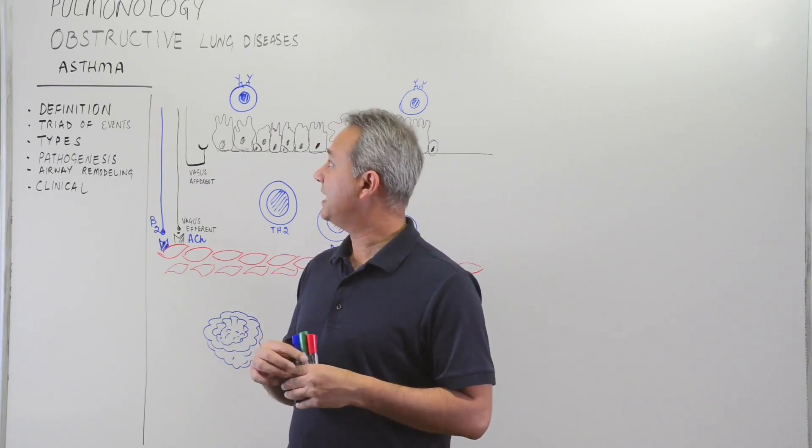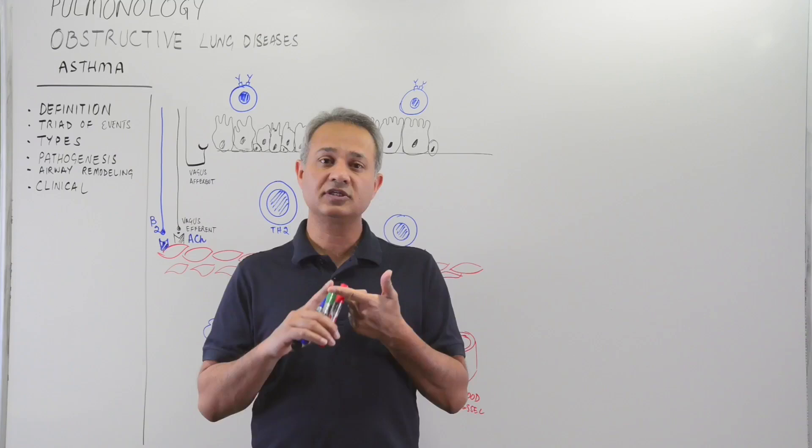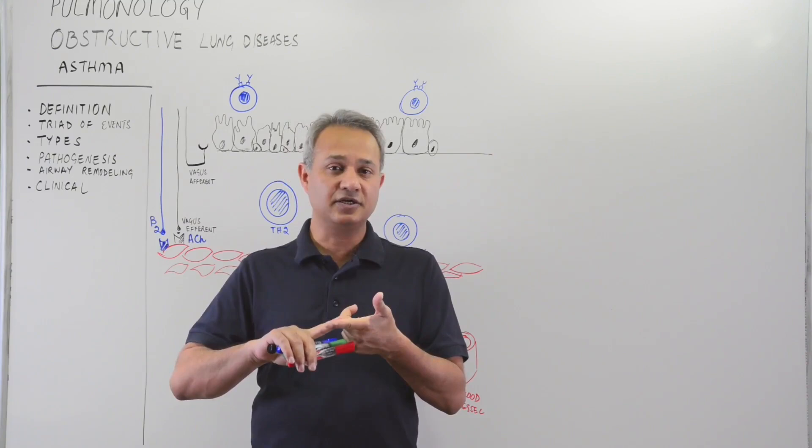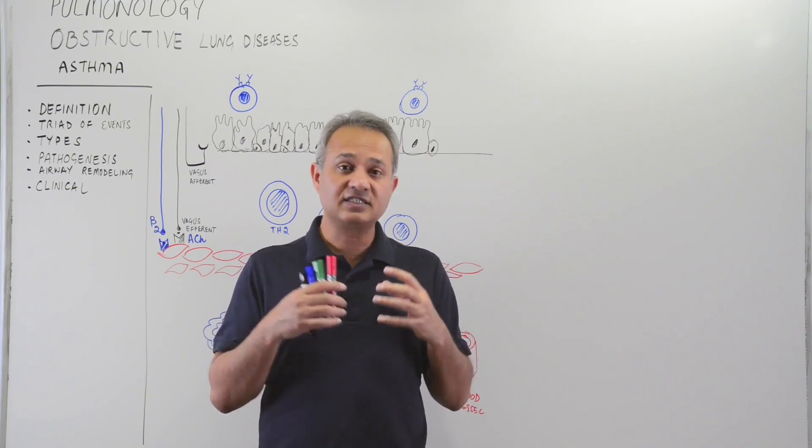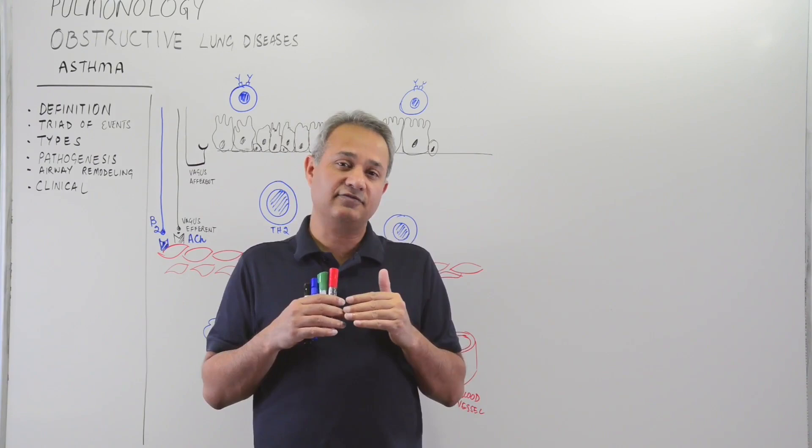Asthma is defined clinically as paroxysmal — which means intermittent — possibly allergic inflammation of the airways, which is accompanied by wheezing, cough, breathlessness, and chest tightness, mostly during the night or early morning. That is the definition of asthma.